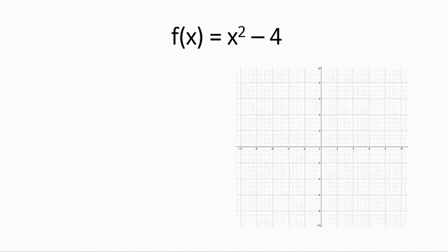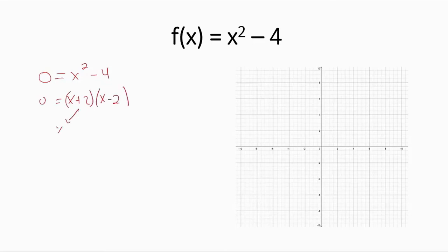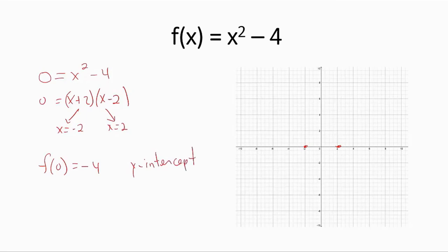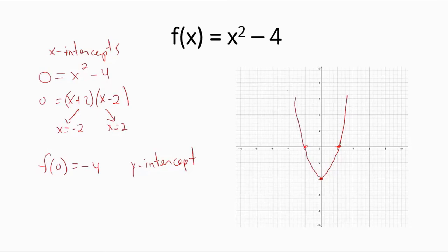In terms of quadratic functions, they are all quadratic equations, and we apply solving techniques to help us graph them. For example, setting the function equal to 0 gives x-intercepts: (x plus 2)(x minus 2) tells us x equals negative 2 or x equals 2. Evaluating the function at 0 gives the y-intercept — there is only one, otherwise we'd violate the definition of a function. Since this is a quadratic function, the graph is a parabola that opens upward.